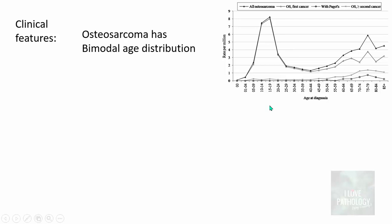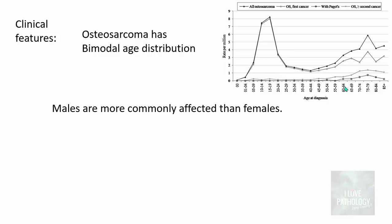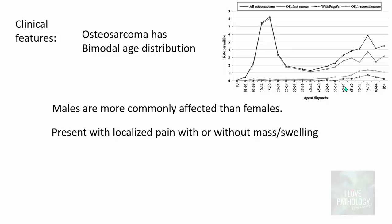Osteosarcomas have a bimodal age distribution, meaning the incidence peaks twice. The first peak is before 20 to 25 years — 75% of Osteosarcomas occur in the age group less than 25 years. The second peak is smaller, around 20 to 30% of Osteosarcomas occurring in elderly individuals. There is a slight male preponderance.